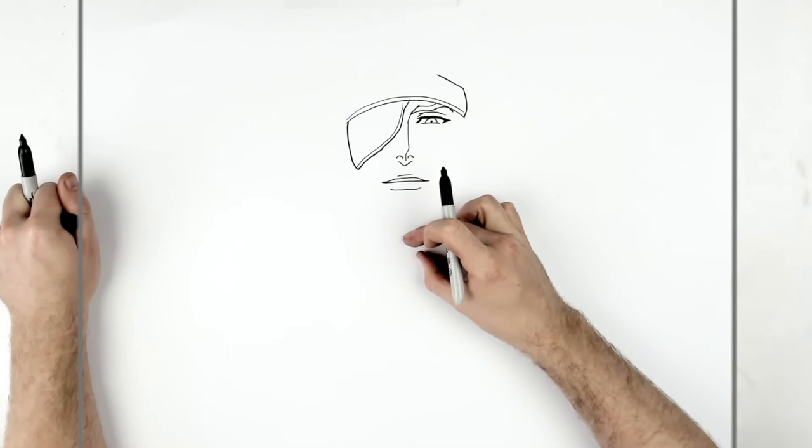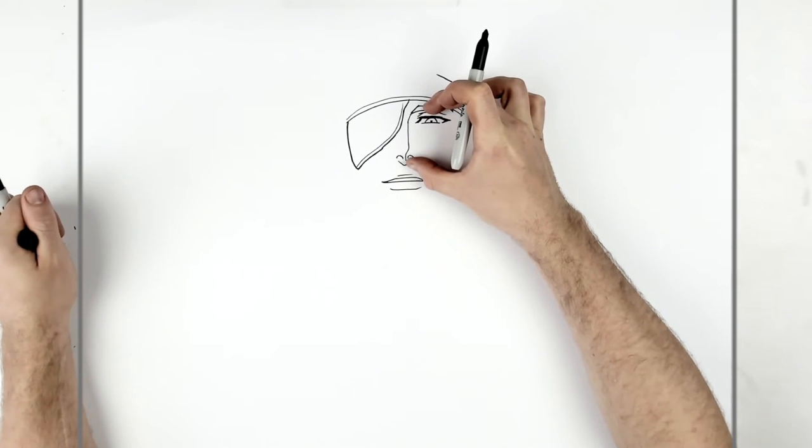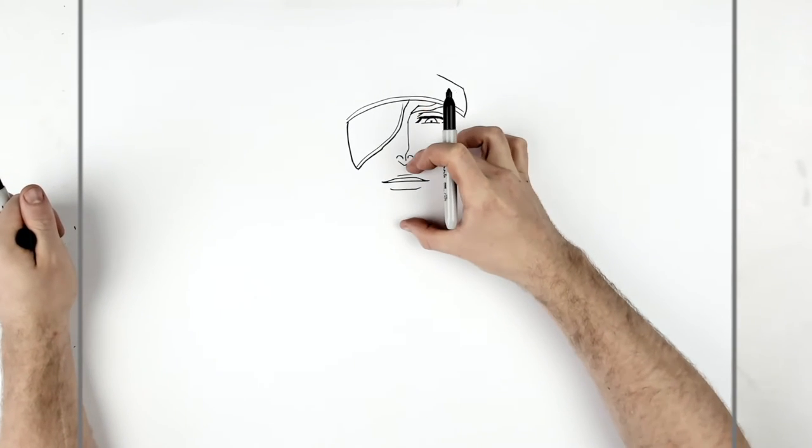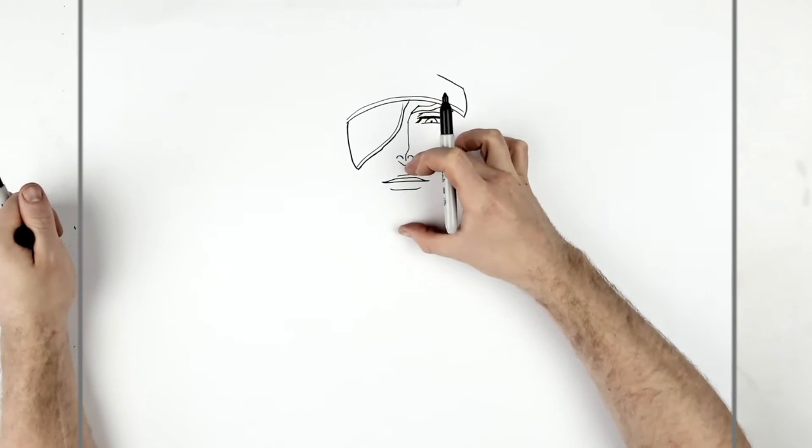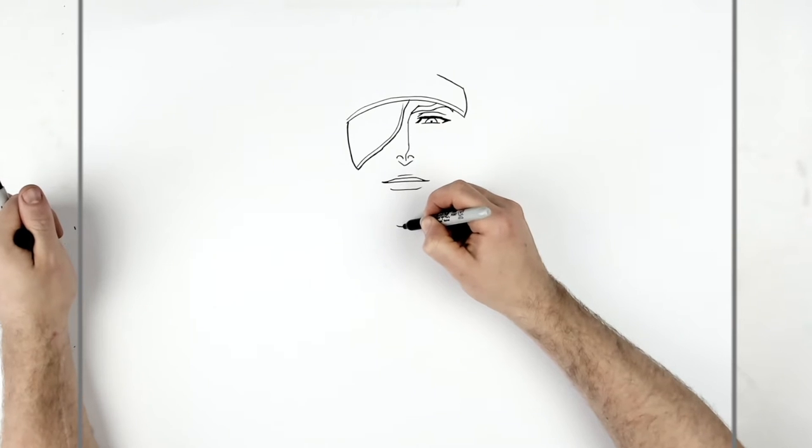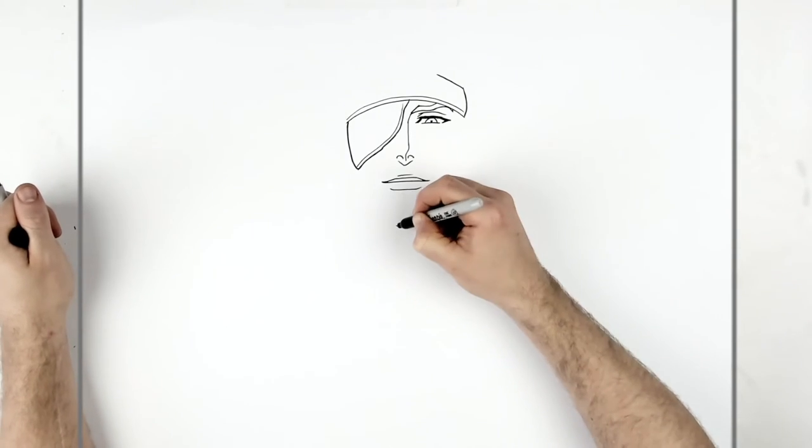His chin is quite far down compared to the rest of his face. I'd say eyebrow to the bottom of his nose, it's about the same as bottom of his nose to the chin. So here to here about the same as here to where the chin would be here.